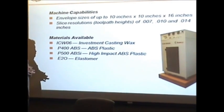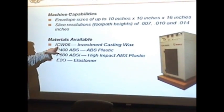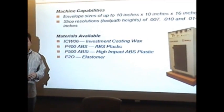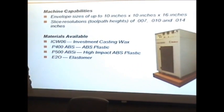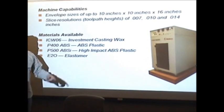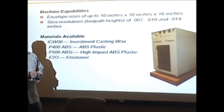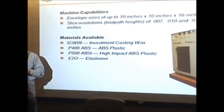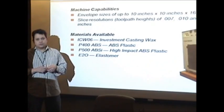And the material available for this older generation technology is wax, which is an investment casting wax that is used for lost wax process. And also it has the capability to use P400, which is ABS plastic. And also an ABSI, which is high-impact plastic that can also be autoclaved, so you can take it into surgery. And another material that you can use is E20, which is an elastomer. This was used previously to make gaskets, so it's a rubbery material.